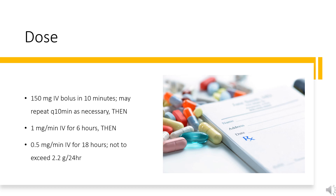Oral loading dose: 800–1,600 mg PO per day for 1–3 weeks until response. Once adequate arrhythmia control is achieved, reduce dose to 600–800 mg per day for 1 month, then reduce to maintenance dose. Maintenance dose: 400 mg PO per day.